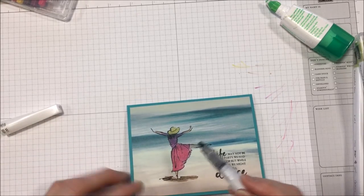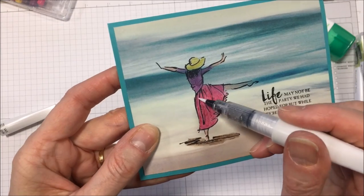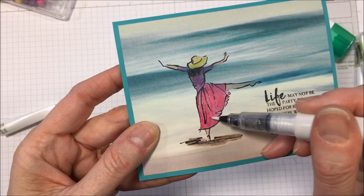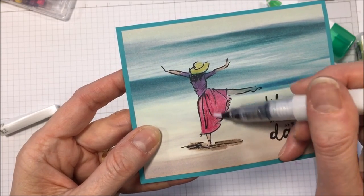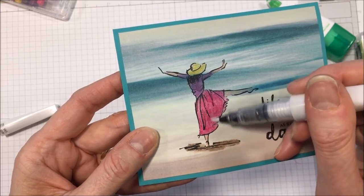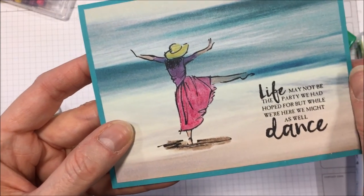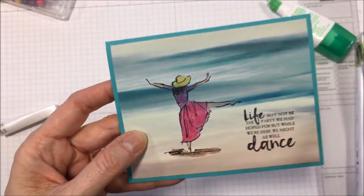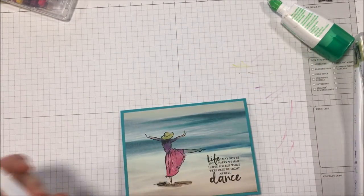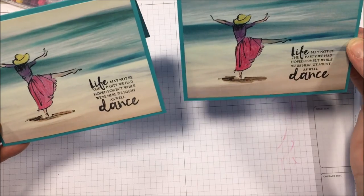The final touch here will be a little bit of, I don't know if you can see it here. It's the Wink of Stella. And I'm just going over her skirt here. I don't know. Can you see? It's sparkling. Okay. We sparkle her skirt. And clean that off. And card number two is done. Look at that. You see the difference? A little darker, a little lighter. And inside, just the mat is different.